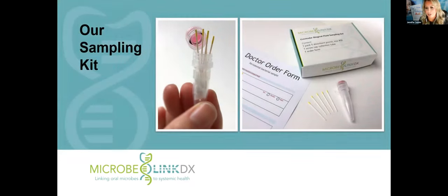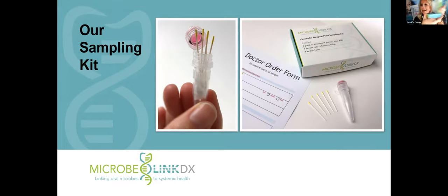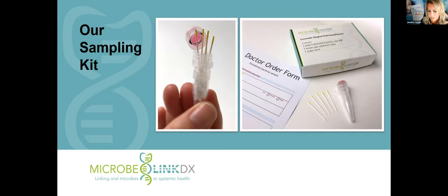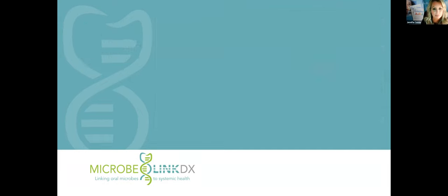I wanted to give a quick summary about our test and what we do — bacterial sampling. Here is our kit. We have paper points, as you can see here. Five paper points are placed down into the deepest pockets, then placed back into this tube, and you send everything back to us. The paper points are designed to absorb bacteria and moisture. They go down to the base of the pockets and are able to collect those anaerobic pathogens — that's where you're going to harbor the most pathogenic pathogens.